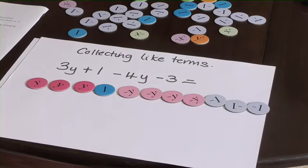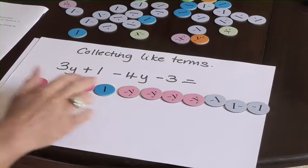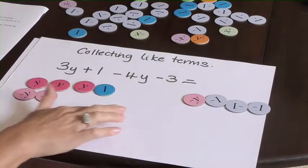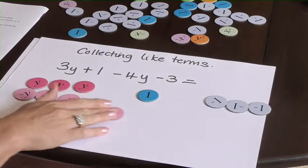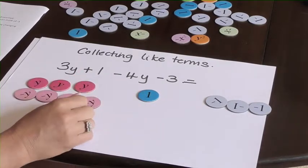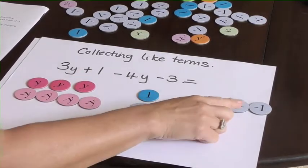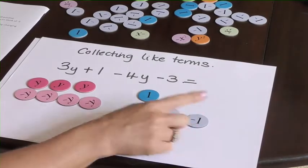So if we collect them together, you could either leave them like that, but it might be easier to group them. So I'm going to put the y's with the y's. And the 1's with the 1's. And then it makes it much easier to look for the zero pairs.